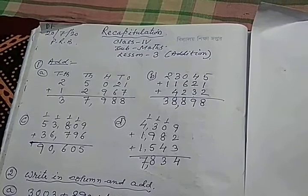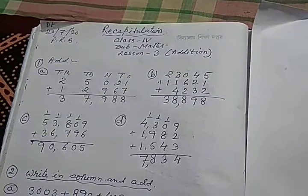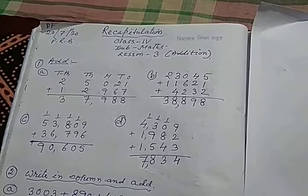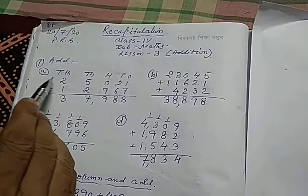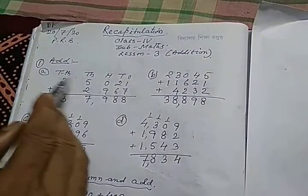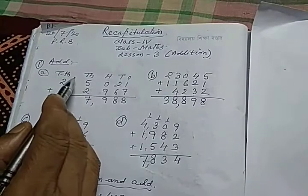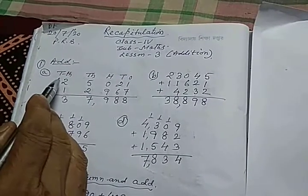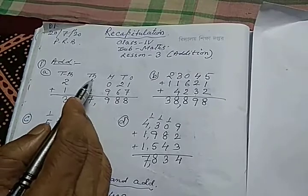You know that we did the addition up to 10,000 place. That is why in the first case, I have drawn the place value table up to 10,000 place. This is 10,000 place, this is 1,000 place, this is 100 place, this is 10 place and this is 1 place.